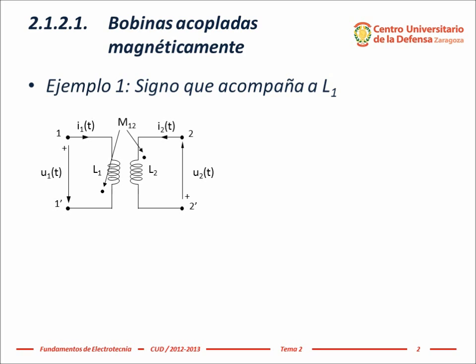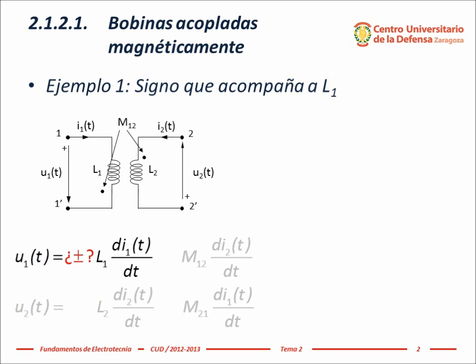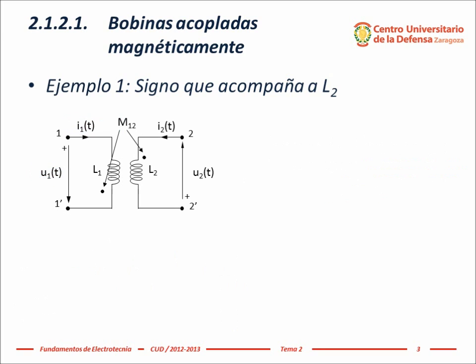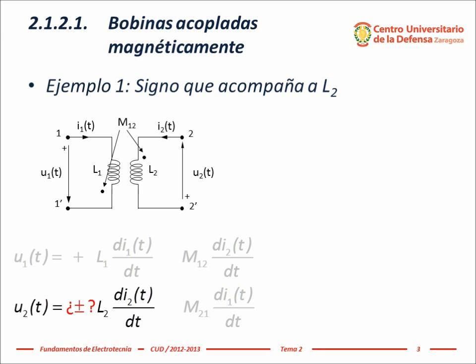Sign of the term containing the self-inductance coefficient L1. We look at the current reference flowing in coil 1 and the voltage reference of coil 1. As voltage and current references have the same sense in the coil — both go from terminal 1 to 1' — the sign of the term containing L1 is positive.